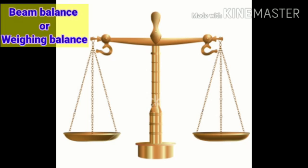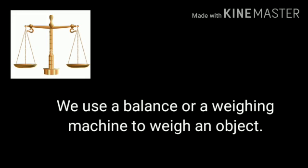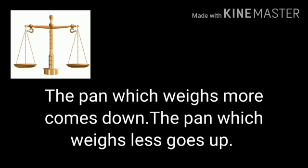This is the picture of beam balance or weighing balance. It is having two pans and these two pans are of same weight. We use a balance or a weighing machine to weigh an object. And where you have seen this? Yes, in the market and the shops.